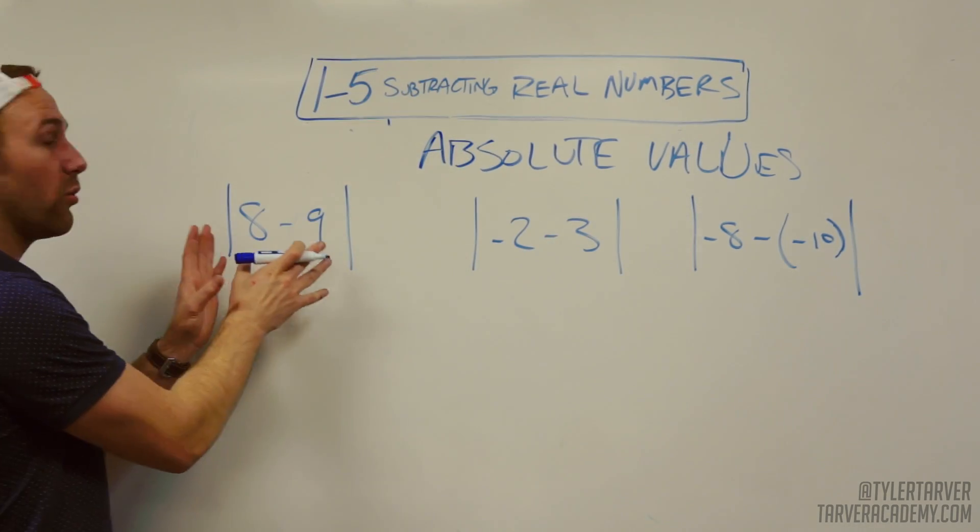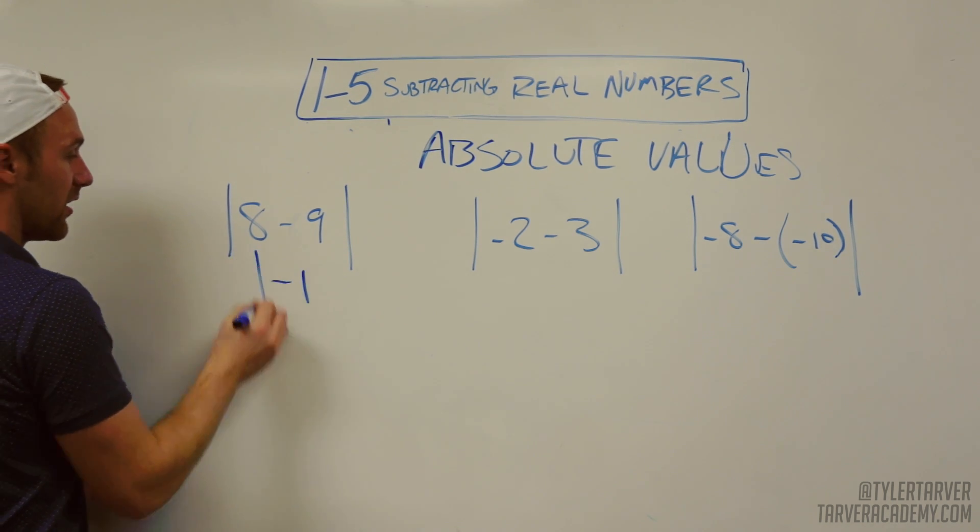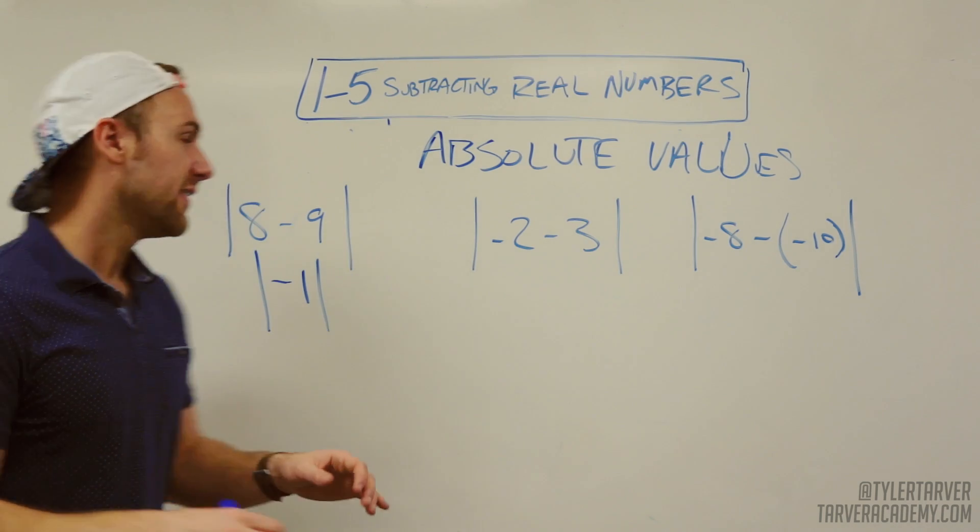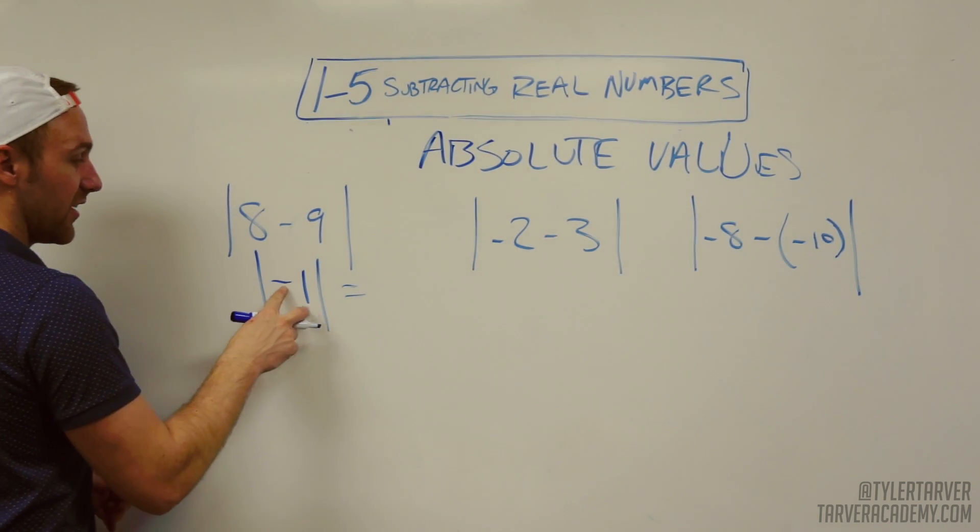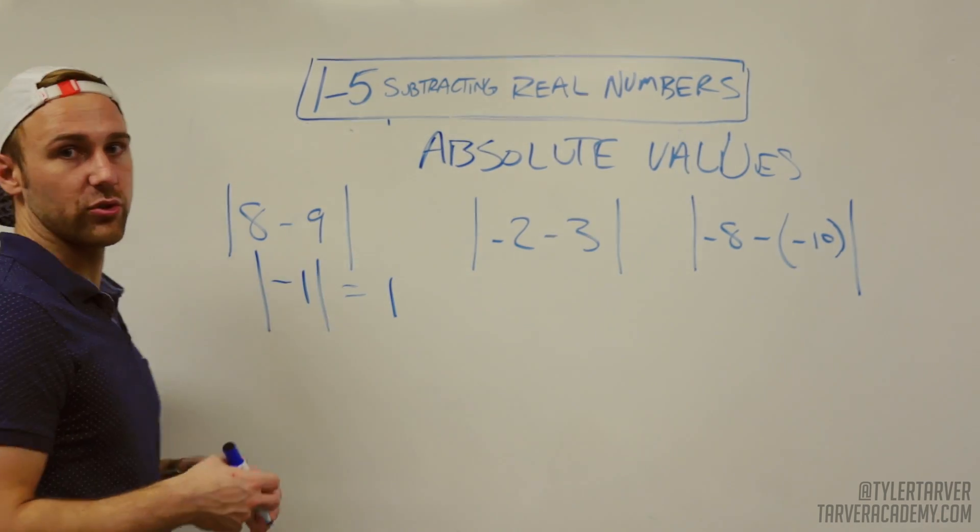So we're gonna work the problem like we would a regular problem. Eight minus nine is negative one. Absolute values are still there. Now, what do absolute values do? They destroy negatives. So that negative is gone. It becomes a positive one and then in the process it destroys itself.